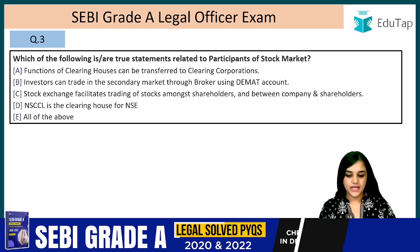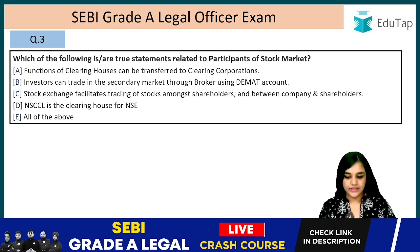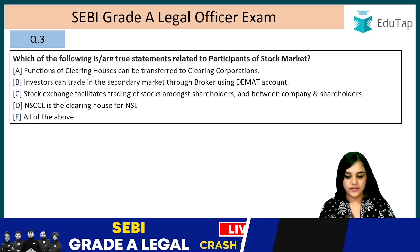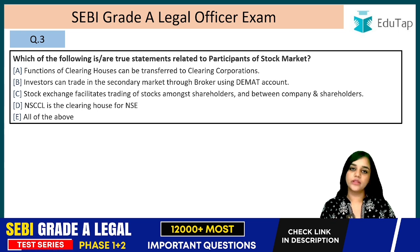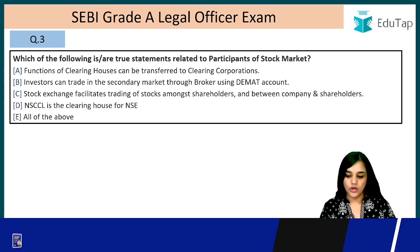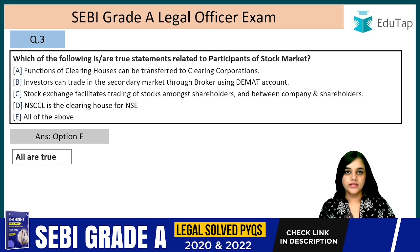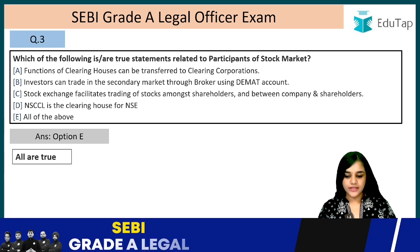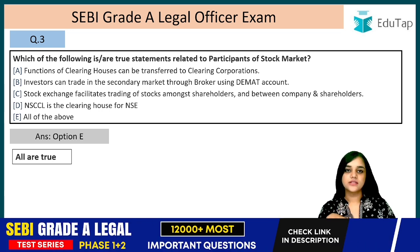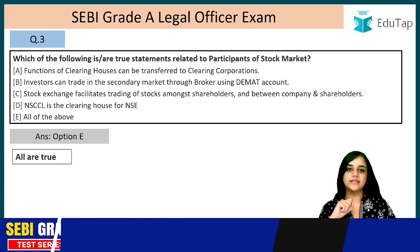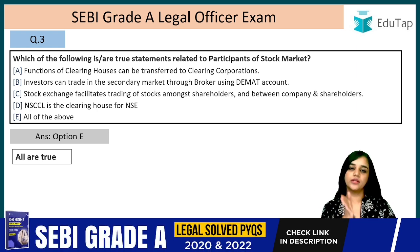Question 3: Which of the following are true statements related to participants of the stock market? (1) Functions of clearing houses can be transferred to clearing corporations. (2) Investors can trade in the secondary market through brokers using a DMAT account. (3) Stock exchange facilitates trading of stocks among shareholders and between the company and shareholders. (4) NSCCL is the clearing house of NSE. The answer is all of the above — all these are factually true statements.